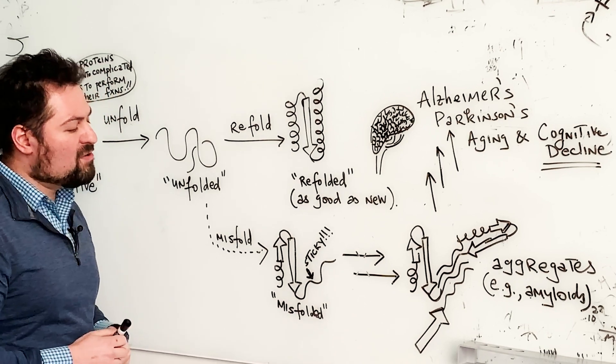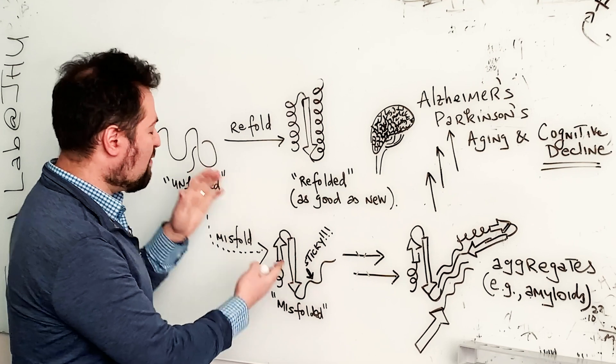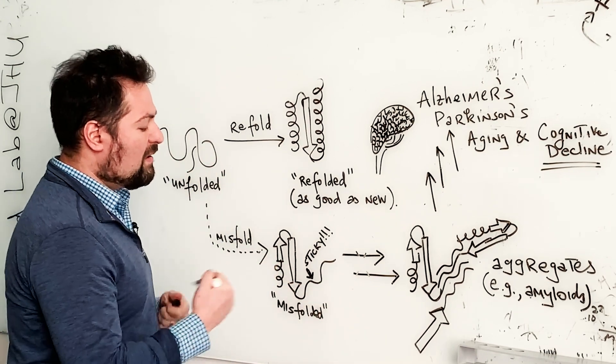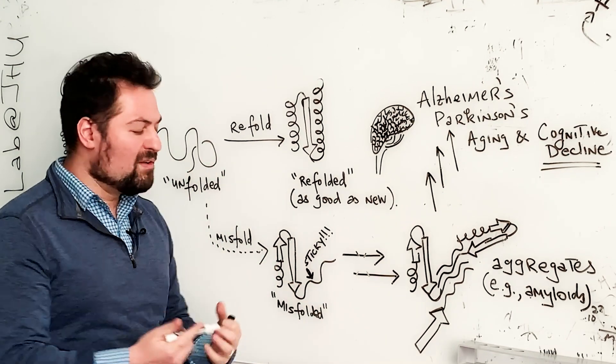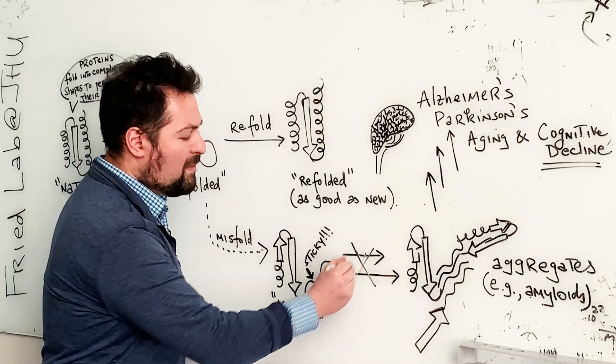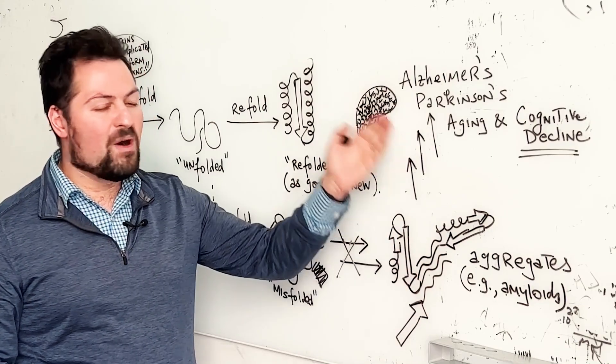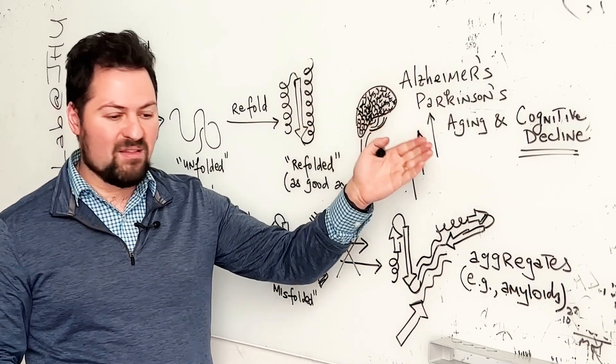And we're also interested in asking, can we, by identifying the proteins that instead misbehave and go in this direction, design molecules that can intercept these misfolded proteins and thereby prevent them from forming these aggregates, which we know then go on to be associated with these disease states?